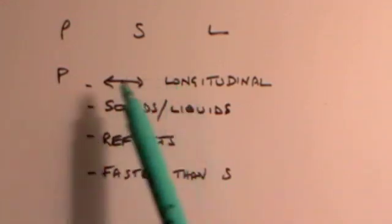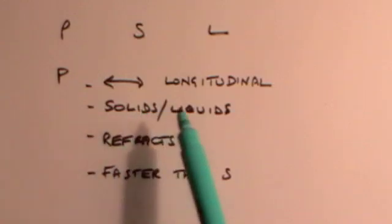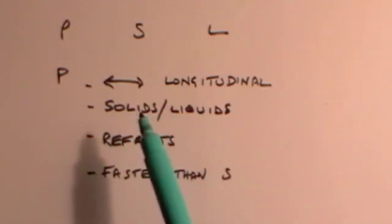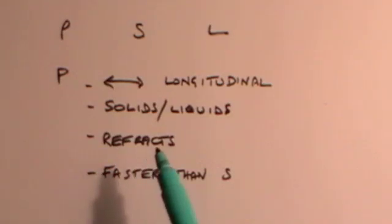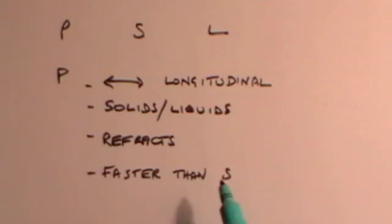First, the P waves. The P waves are longitudinal waves. So in that sense they're rather like sound. They vibrate backwards and forwards in the direction of motion. They can travel through solids and liquids. So the key point here is they are able to travel through the liquid outer core of the Earth, as well as going through all the solid parts of the Earth. They refract as they go through different densities. So as the density of the Earth increases as you go further in, so the waves refract. But particularly when they come to a boundary. For example, when they come to the boundary between the solid mantle and the liquid outer core, they refract extensively. And they travel faster than S waves.